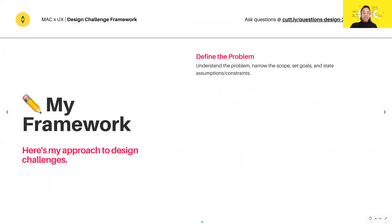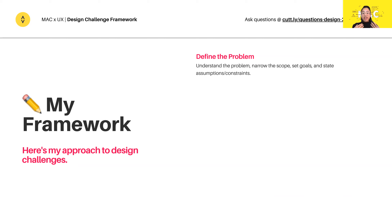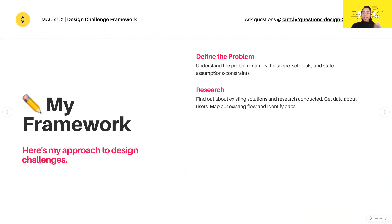Before we get started on the design activity, let me give a really high-level overview of the framework. Basically, my framework is very simple. First, define your problem — always try to understand the problem first, never jump straight into a solution. Narrow your scope, set some goals, state your assumptions straight off the bat, and get some constraints. Second, do your research — try to understand if there are any existing solutions, understand your users more, see if there's an existing flow, and then identify gaps and opportunities to improve the user experience.